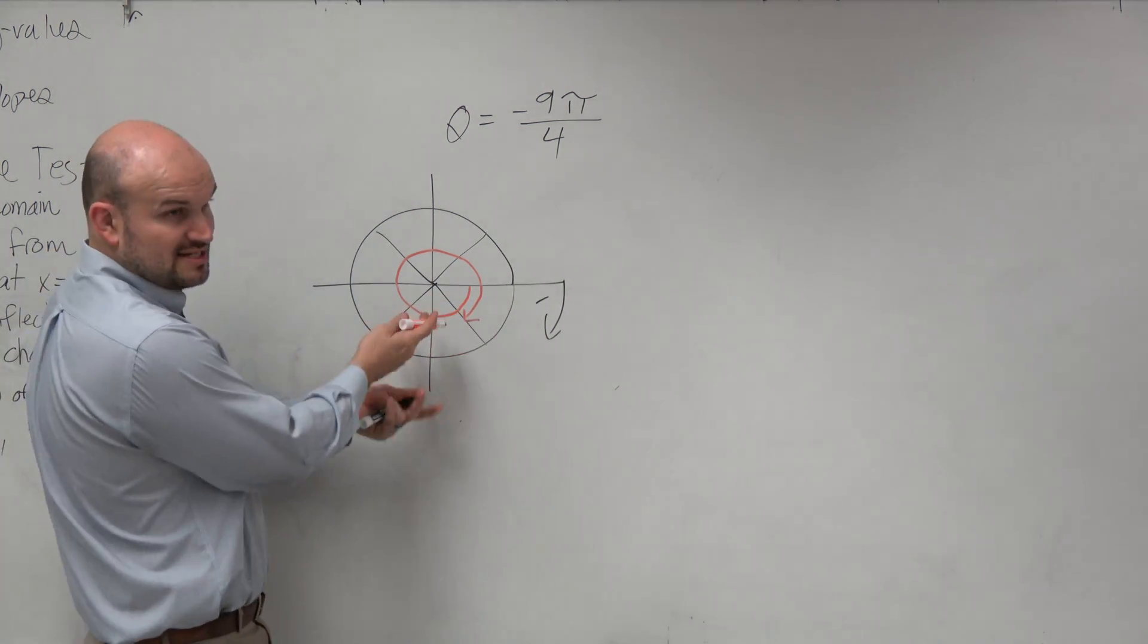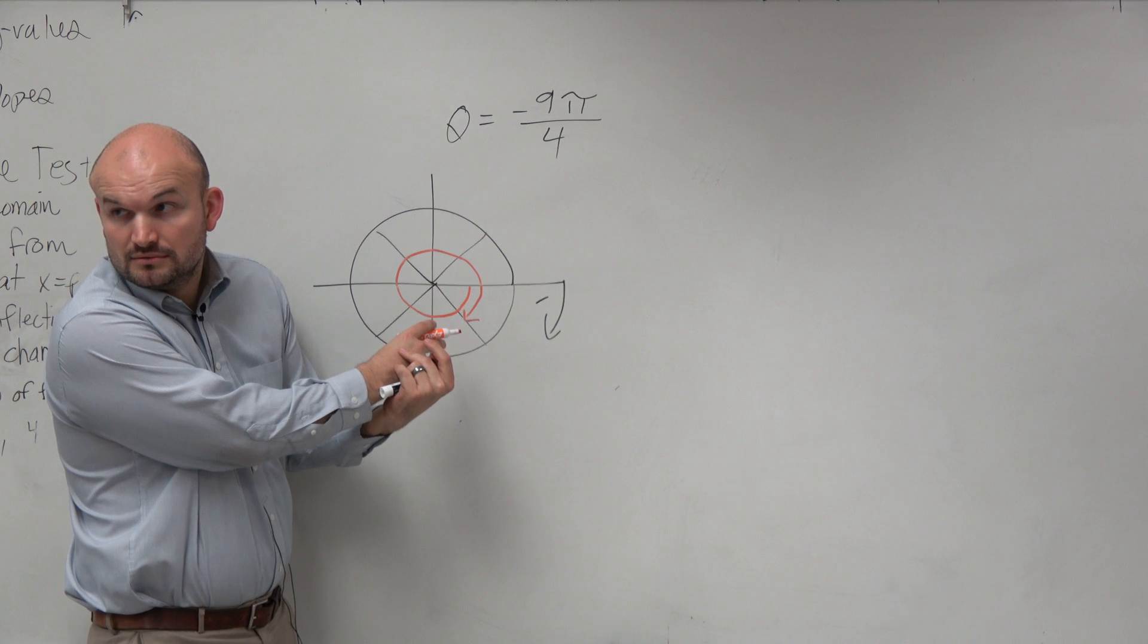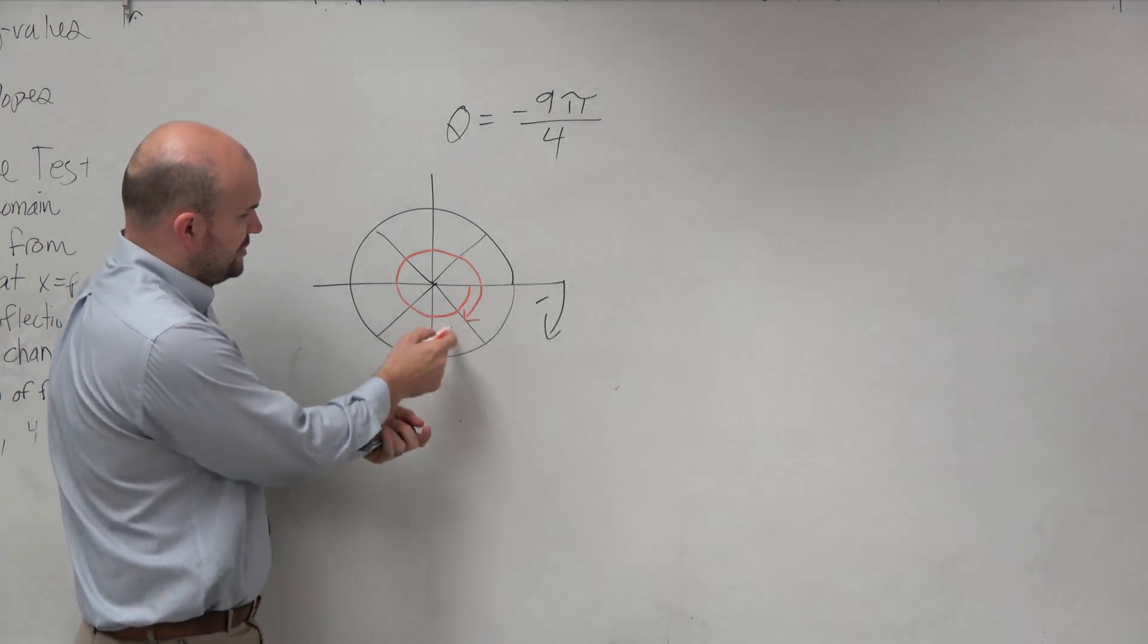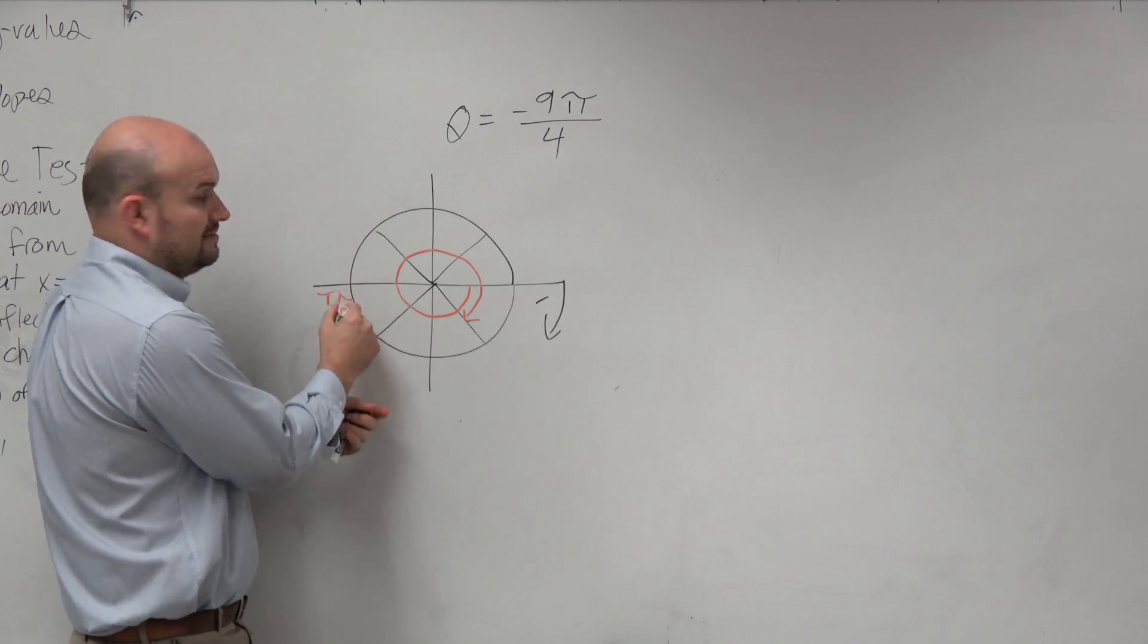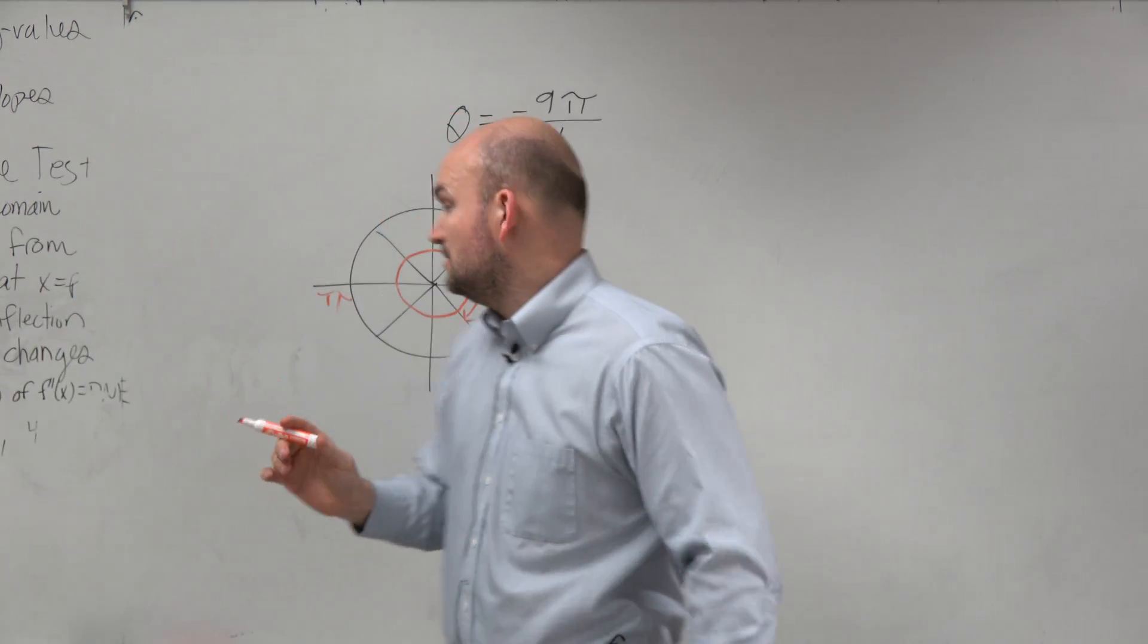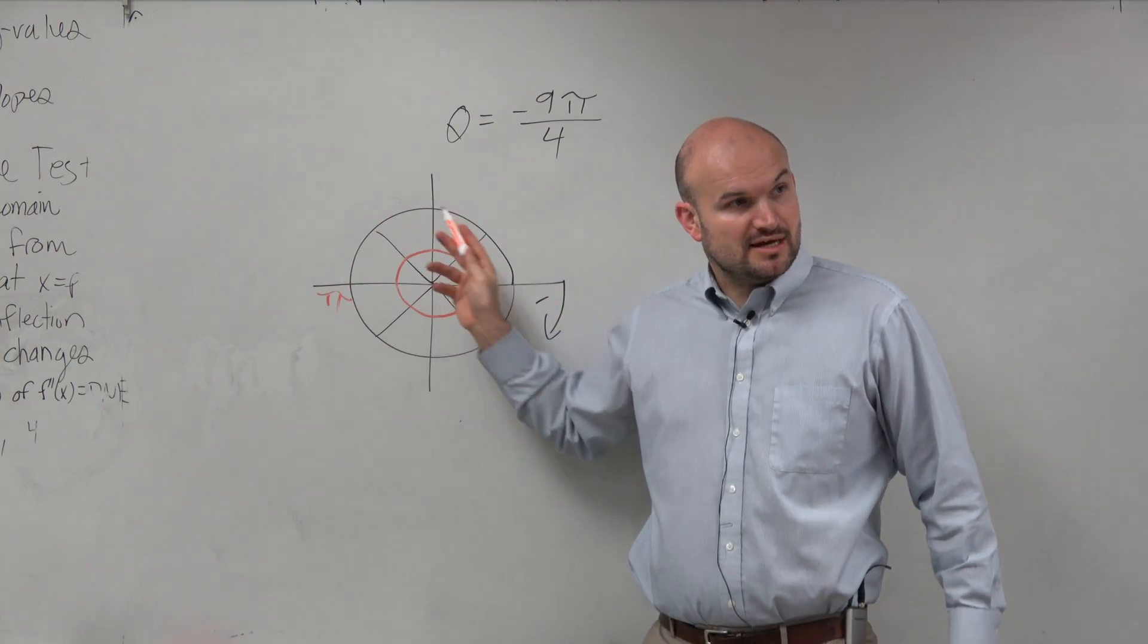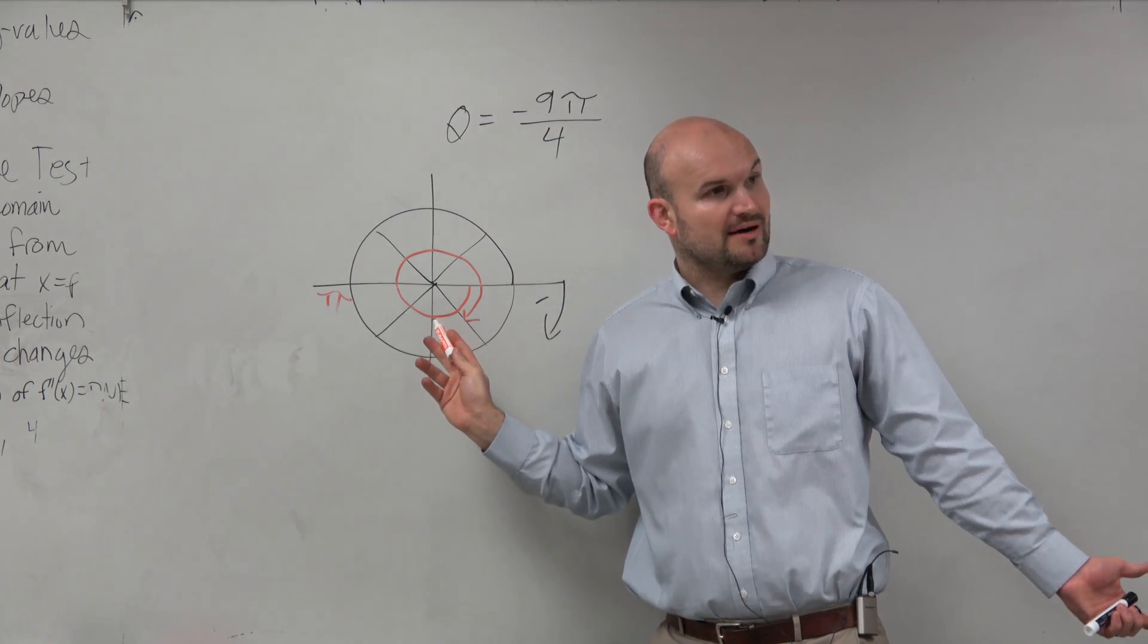OK, and then we can see that's exactly what that angle looks like. 1, 2, 3, 4. Remember, this is pi. Remember, pi is half, right? So 1, 2, 3, 4, 5, 6, 7, 8. OK? So you could go all the way around and then graph the angle at negative 9 pi over 4.